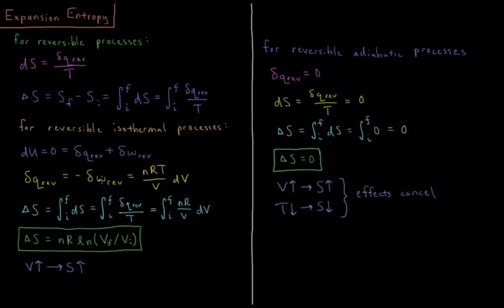The reversible work is minus nRT over V dV, so the negative of that is plus nRT over V dV.